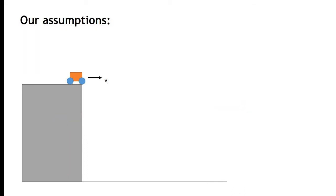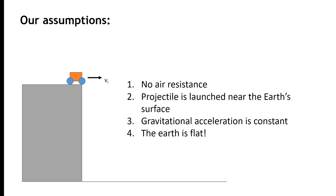Here are our assumptions for solving projectile motion. Number one: no air resistance, because that would highly complicate the path of our projectile. Number two: the projectile is launched near the Earth's surface, so gravitational acceleration is constant. And number four: the Earth is flat — that's the biggest assumption, because from our perspective the Earth looks flat and we can't really see its curvature.